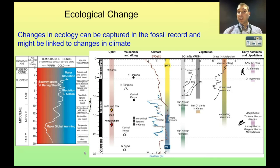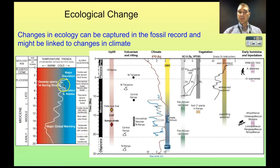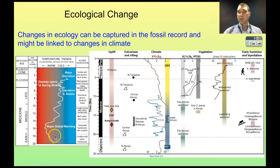Changes in ecology can be captured in the fossil record, and these are linked to things like changes in climate. Looking at vegetation in Alaska, for example, we can see different types of species and the temperature trends occurring alongside them. When there are large amounts of warming, we get temperate hardwoods and conifers present in Alaska. When it's colder and more recent, we see tundra and pine, spruce, and birch forest. Looking at particular types of evidence, we can determine temperature trends for the area.